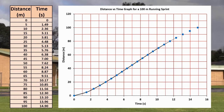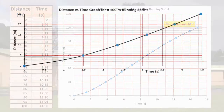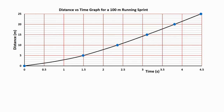We can then join the dots with what's called a line of best fit, which here takes the shape of a smooth curve. We can now get information from the graph. For example, how much distance did I cover in 1 second? Let me zoom in a bit first. Reading off the graph, we can see that the answer is about 3 metres.